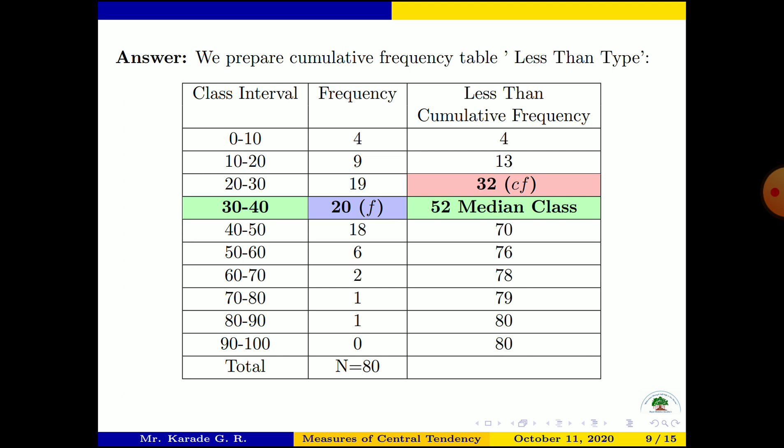The total number of observations n = 80. Now in Step 2, we find M = n/2 = 80/2 = 40. So we need to locate which class interval contains the 40th observation. Looking at the cumulative frequencies, the 40th observation lies in the class 30–40, since the cumulative frequency just before it is 32 and the cumulative frequency of 30–40 is 52.